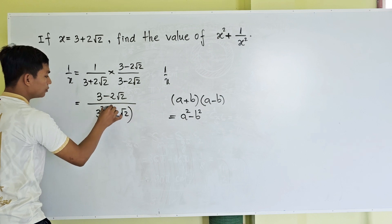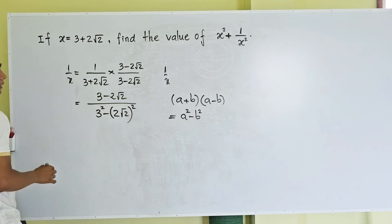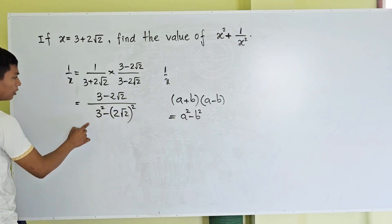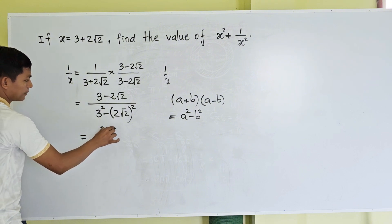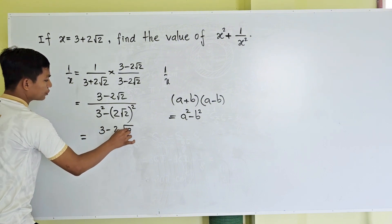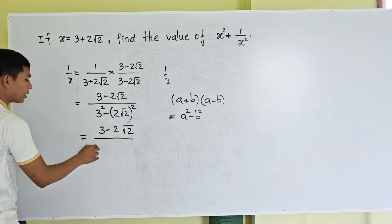So the expression becomes 3 minus 2 square root 2, divided by 3 squared minus (2 square root 2) squared.